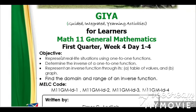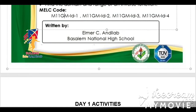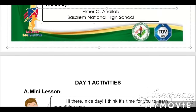The objectives for this week are the following: represent real-life situations using one-to-one functions; second, determine the inverse of a one-to-one function; third, represent an inverse function through its table of values and graph; and find the domain and range of an inverse function. We also have the MELC code. This GIA for week 4 is written by Sir Elmer C. Andilav from Basalim National High School in Zabuagas, Bugay Division.